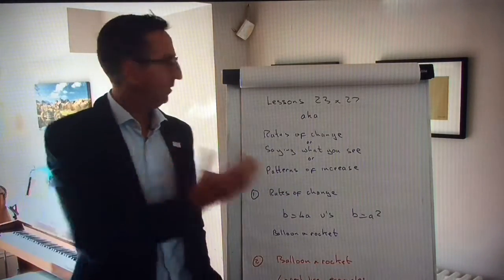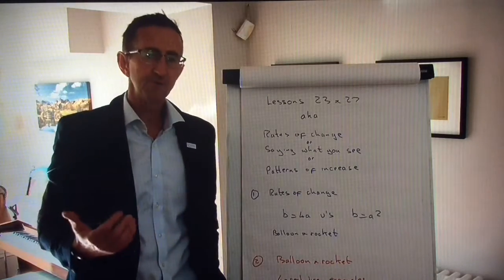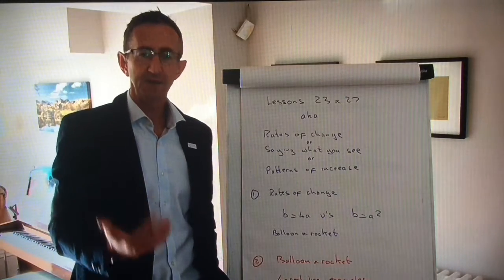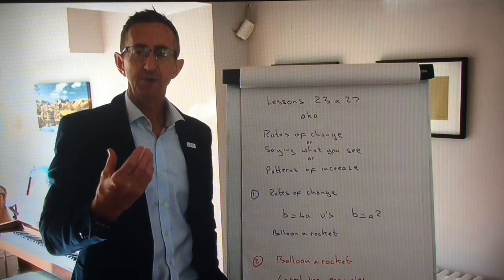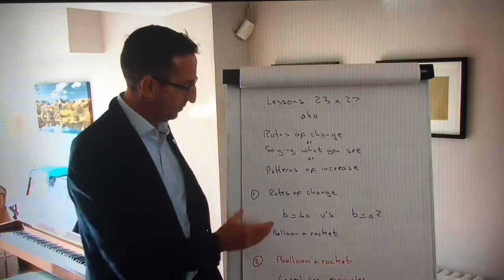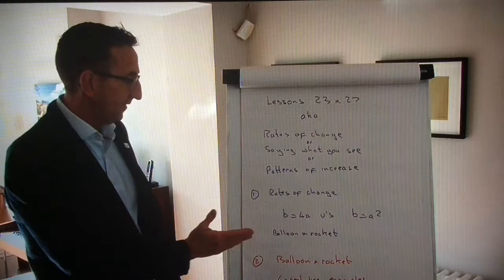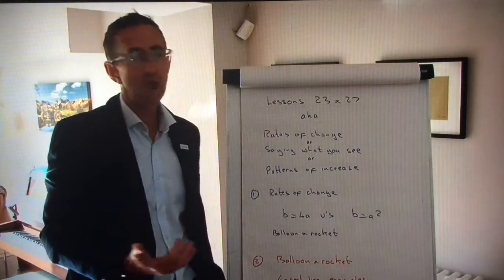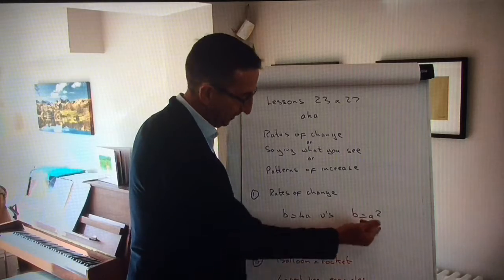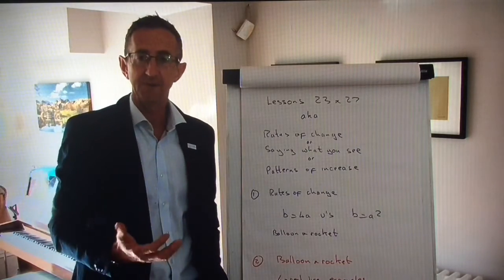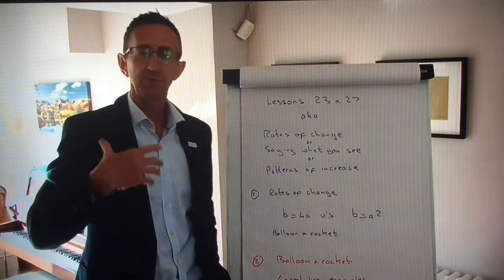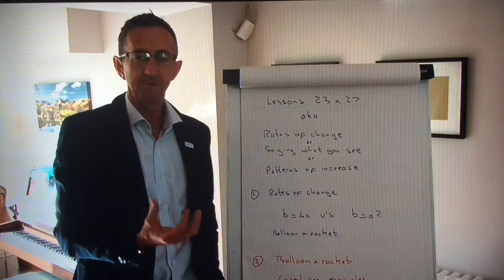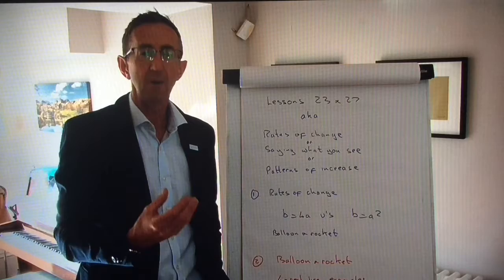The first lesson — if you look in the file, lesson 23 — is very, very straightforward, but the ending is very interesting. You could either do that in one lesson or do the first part, which is where the children draw a graph of B equals 4A and describe it, compare the shapes, and come up with as many words as they can to describe it. It's a very simple, very straightforward lesson — could be done in half an hour.